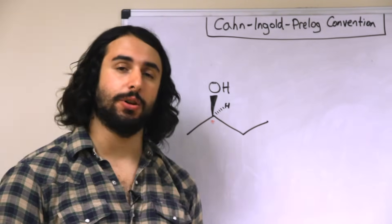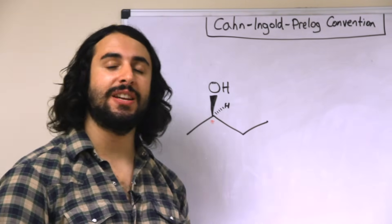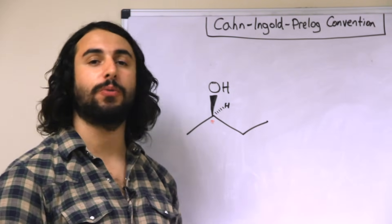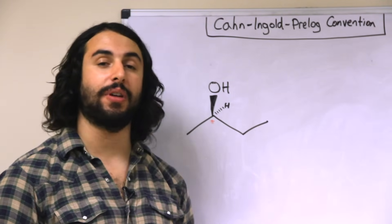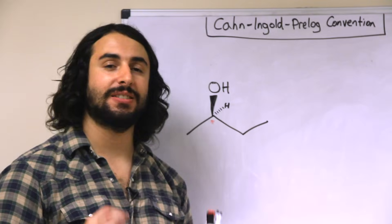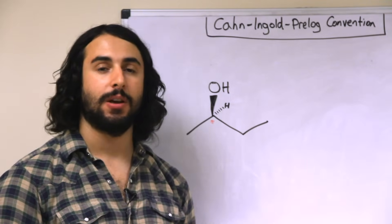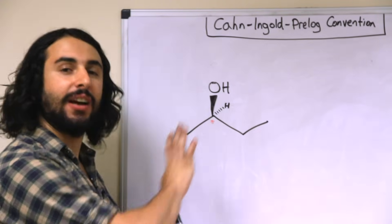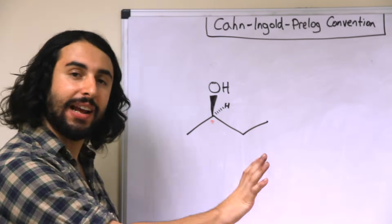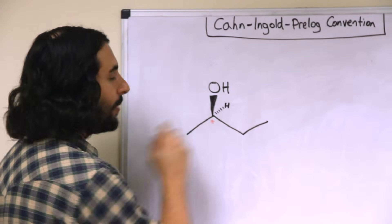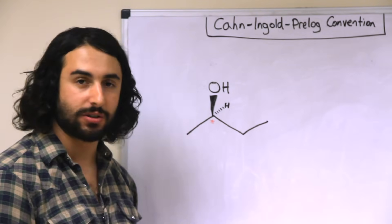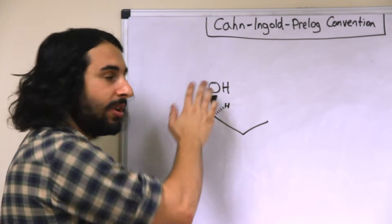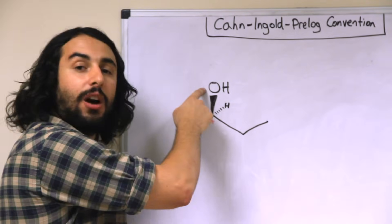What we're going to need to do is assign priority to each of those four groups, and we're going to do that by assessing atomic mass one atom at a time. Without looking at an extended chain, we see that this carbon atom representing the chiral center is connected to an oxygen atom — not a hydroxyl group, but simply an oxygen atom — a carbon atom over here, a carbon atom over here, and a hydrogen atom.